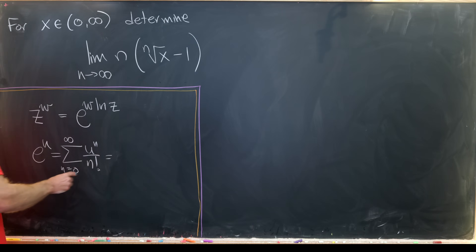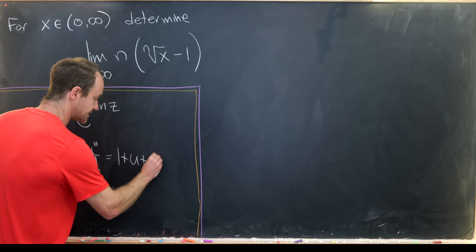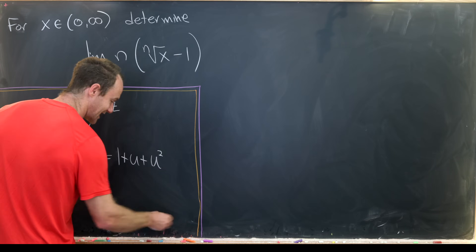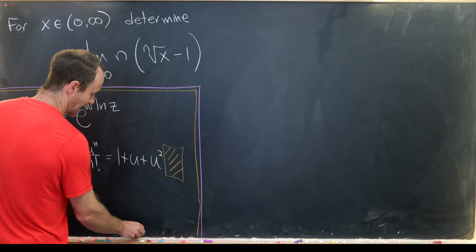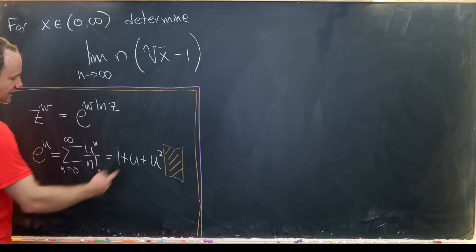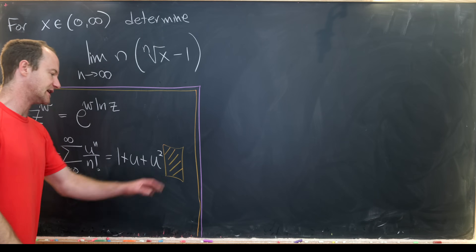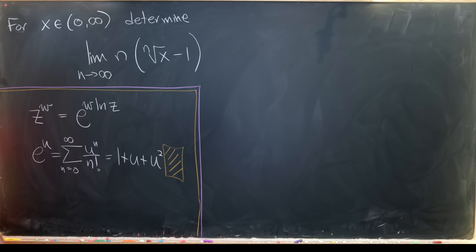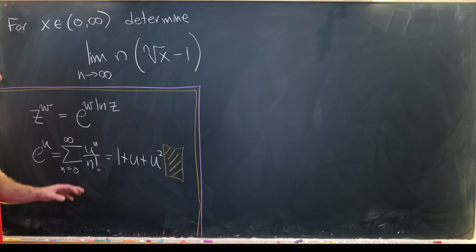That turns out to be one plus u plus u squared times a bunch of other stuff — everything higher than u squared, so u squared over two plus u cubed over three factorial, and so on. We can factor u squared out of everything that's left and call that some sort of remainder term, without worrying about being super careful about that.